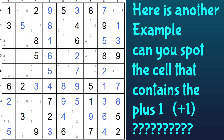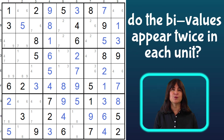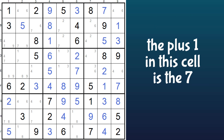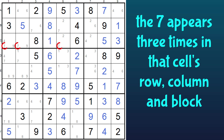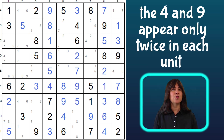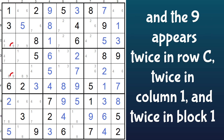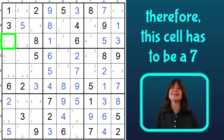Here's one last one. This time I won't go through the logic with you — just see if you can spot the plus 1. Does this conform to the rule of the bivalue cells appearing twice in each row, twice in each column, and twice in each block? Which cell contains the plus 1? Yes, this cell. And what value is the plus 1? This time it's the 7. This cell has a 4, 7, and 9, but only the 7 appears three times in the row, three times in the column, and three times in the block. The other bivalue candidates appear only twice in each row, column, and block. The 4 appears twice in the row, twice in the column, and twice in the block. And the 9 appears twice in the row, twice in the column, and twice in the block. So this cell has to be a 7.